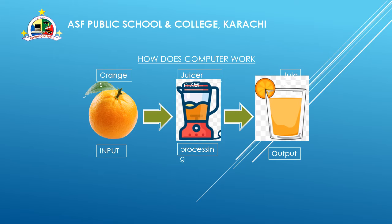Our third step: the result of squeezing is the juice that you pour out into a glass. The juice is the output you get from the process. When you input the oranges and put them in the juicer, the juicer made the juice. And then the result is we got the juice.